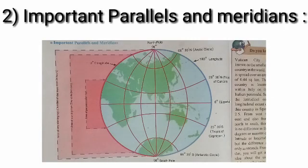The next point is important parallels and meridians. Dear students, in your textbook, you can see figure number 2.4. With the help of this figure, we are going to see this point. In this figure you can see the graticule and certain lines on the world map. These are some important parallels and meridians.